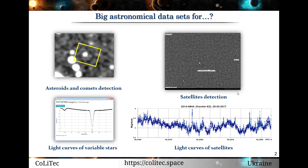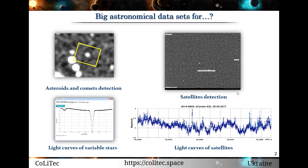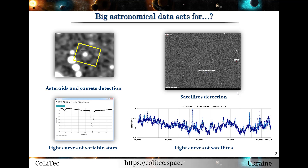When we have a lot of astronomical data, what can we do with it? There are a lot of directions of research in astronomy. Some of them are solar system objects, variable stars, asteroids, comets, near-Earth objects, satellites, and others.